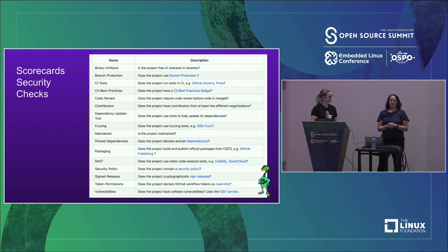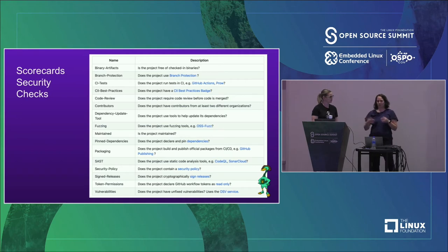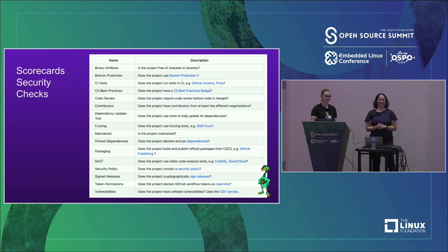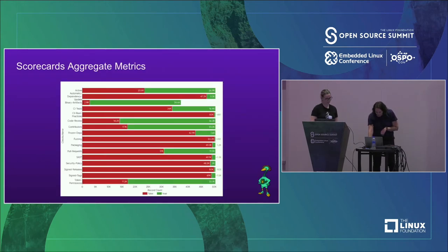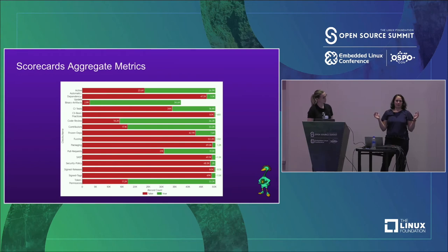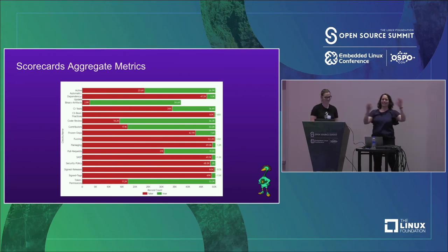Here's a list of the current heuristics we have today. Branch protection - we want to see if branch protection is turned on in the repo. We want to see if maintainers have access to push to the main branch without going through a pull request process. We want to see how many contributors are part of the project or how many organizations are involved. We're also doing checks around fuzzing - is the project integrated with fuzzing for finding vulnerabilities? And does it have a CII badge, which is a list of best practices we encourage projects to follow? Unfortunately, looking at aggregate metrics, there's a lot more red than green, and making this graph more green is what we're going for.